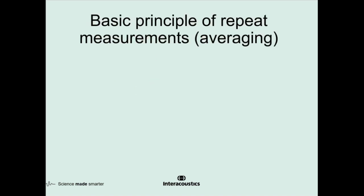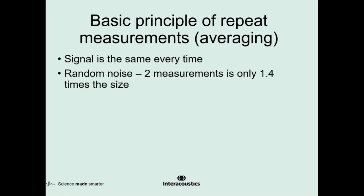Averaging functions when we have a signal that is the same each time we trigger it. In the case of an otoacoustic emission, whether it's a TE or a DP, we repeatedly apply an identical stimulus and that triggers an identical response from the cochlea. Noise is always present in a measurement and it's probably random in nature. When it is random, adding two measurements of noise together results in noise that's not twice as big but actually 1.4 times the size.